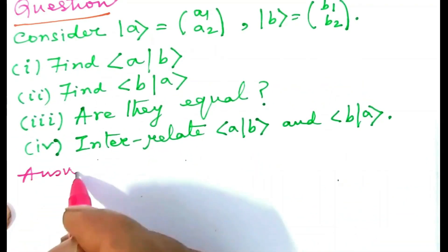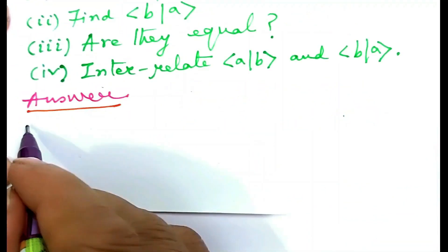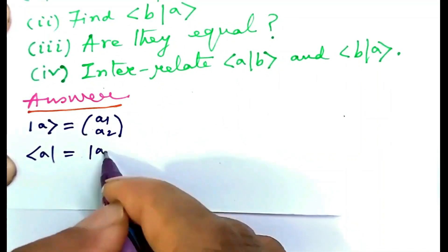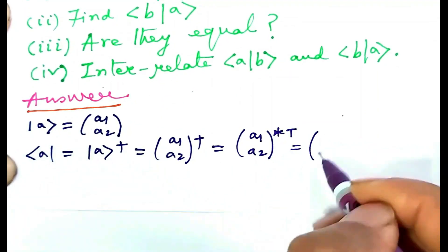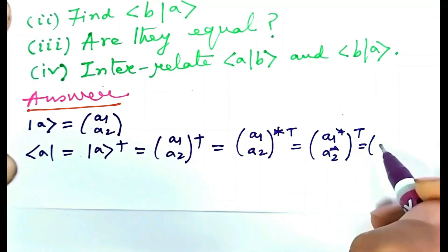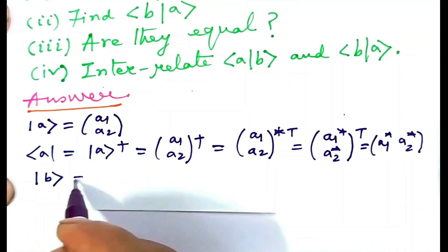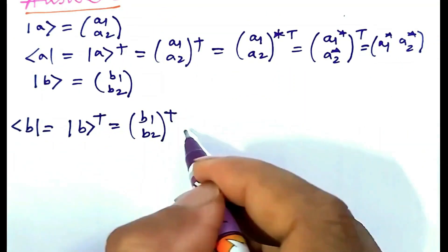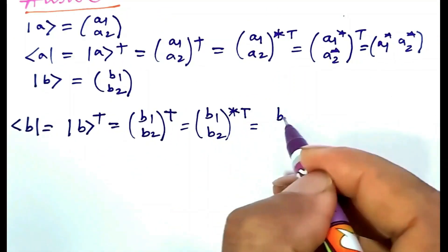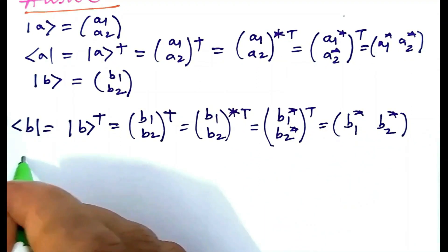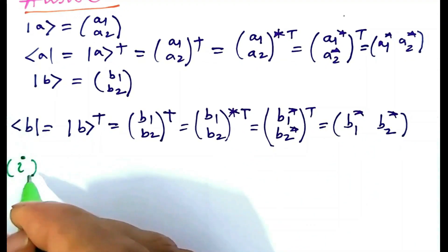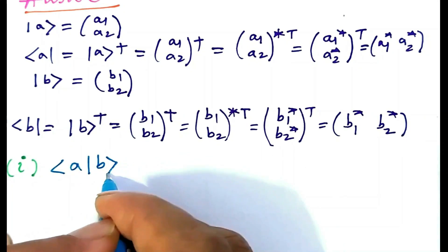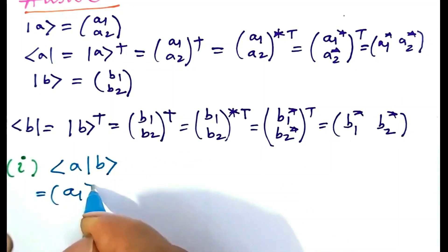We come to the answer now. Ket A is a column matrix (a1, a2), then bra A is a row matrix (a1*, a2*). Ket B is a column matrix (b1, b2), then bra B is a row matrix (b1*, b2*). For answer to one, consider the inner product bra A ket B, which is row matrix (a1*, a2*) multiplied by column matrix (b1, b2).